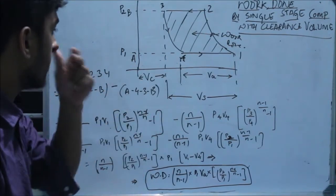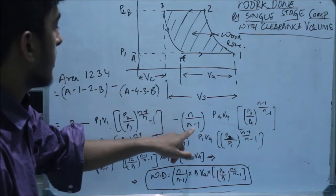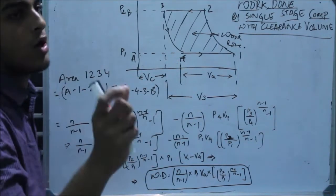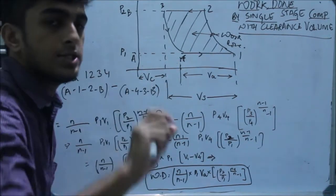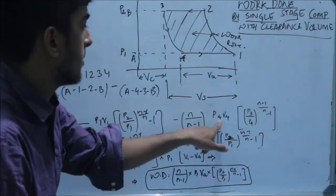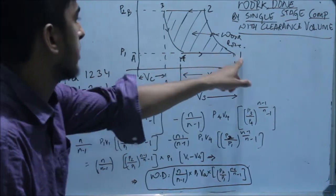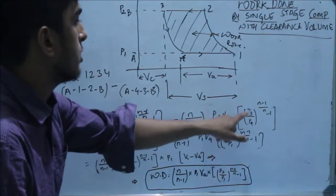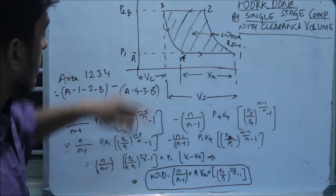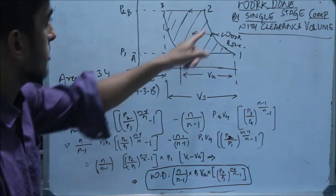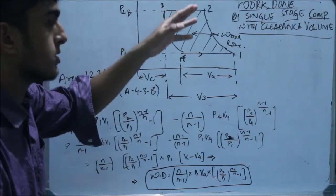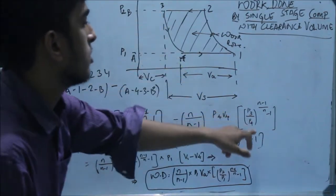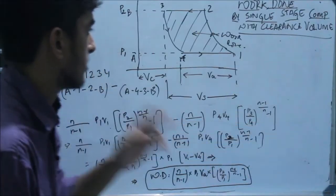The area A43B is given by N over (N minus 1) into P4 V4. We always write the initial pressure first — that is P4 V4 in this curve and P1 V1 in the other curve. So, P4 V4 into (P3/P4) to the power (N minus 1)/N, minus 1. Here P3 is the delivery pressure and P4 is the suction side pressure.